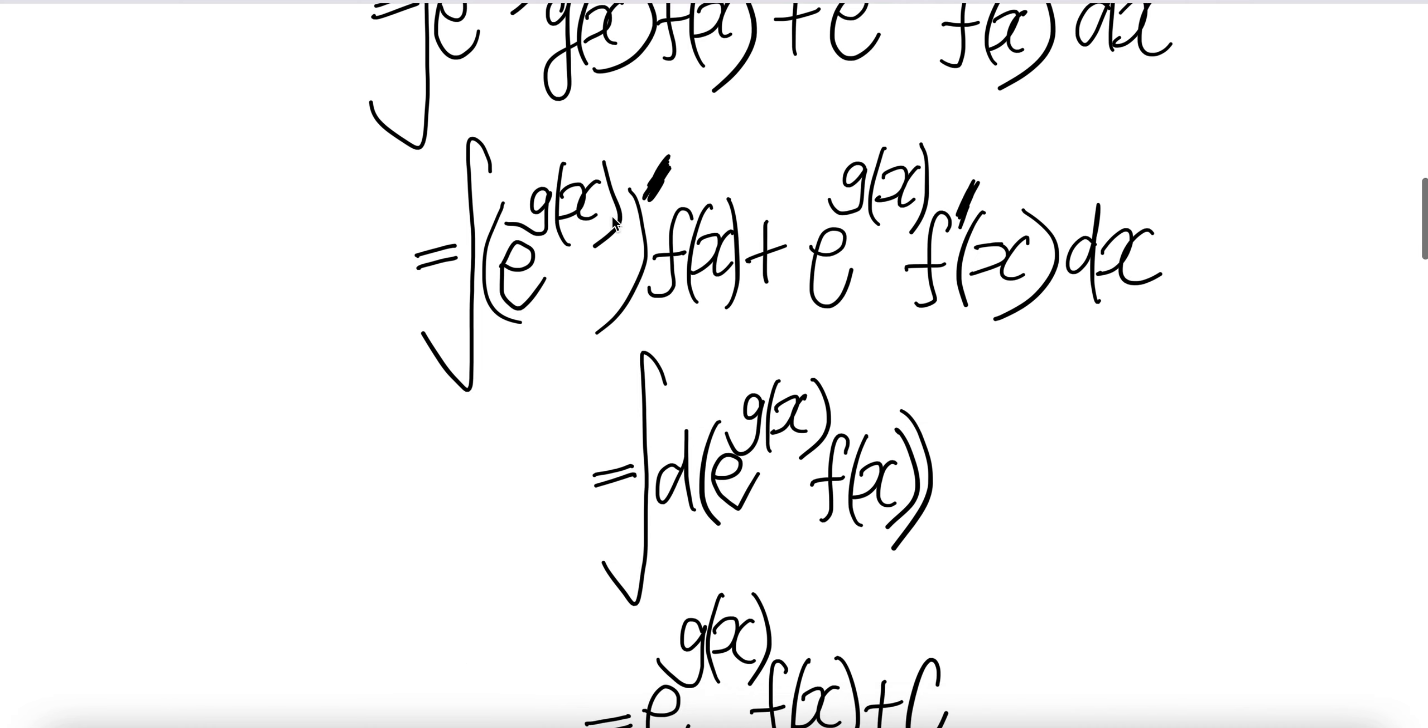Now notice that this is the derivative of the first function times the second function plus the first function times the derivative of the second function. That will give you the derivative of a product of two functions, i.e., using the product rule.